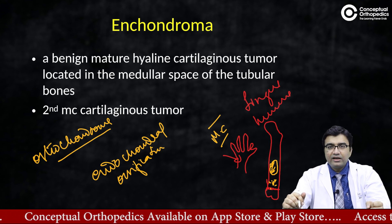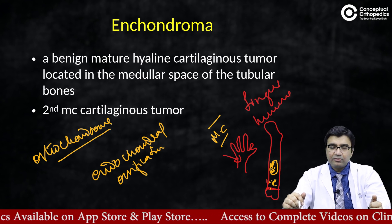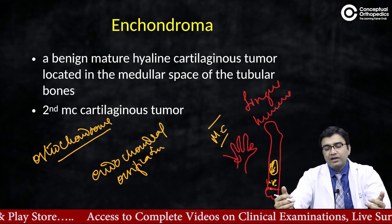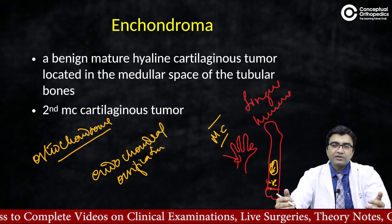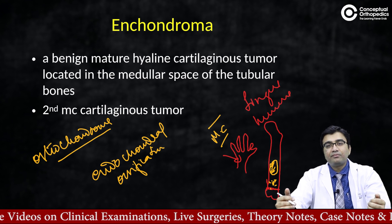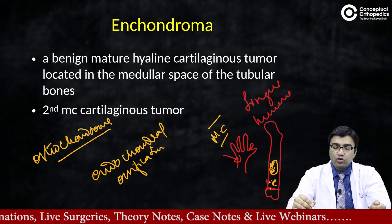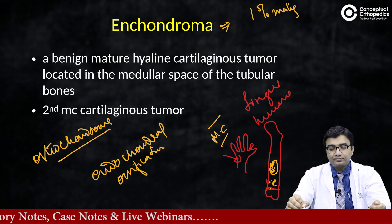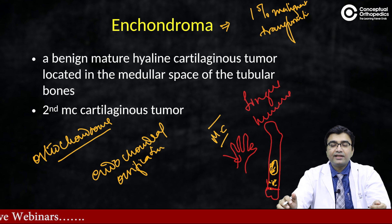Why is it important that we identify them properly? Because they can behave differently — apart from situations where they are accidentally detected, many of these tumors may be locally aggressive and there is a certain percentage of chance they may undergo malignant transformation. For solitary enchondromas, there is around a 1% risk of malignant transformation. We will cover how to identify which conditions have this risk of malignant transformation in detail.